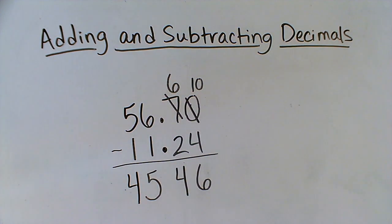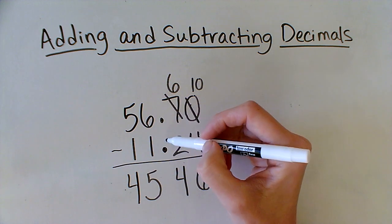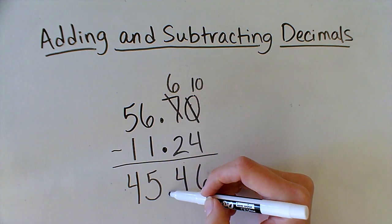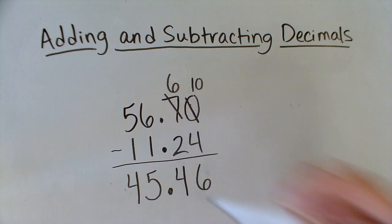And then probably the most important thing I need to remember to do is to drop my decimal down in the exact same place lined up in my answer. So 56.7 minus 11.24 equals 45.46.